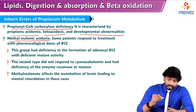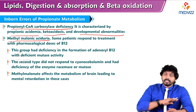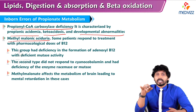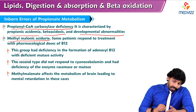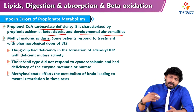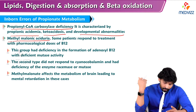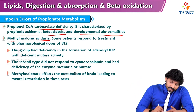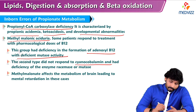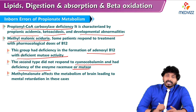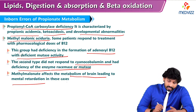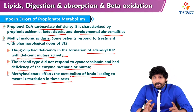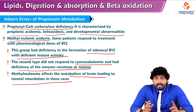Methylmalonic aciduria — we have already seen this in case of B12 deficiency: L-methylmalonyl-CoA will not be converted into succinyl-CoA, leading to accumulation of methylmalonyl-CoA in the body and causing methylmalonic aciduria. This can be treated by giving an oral dose of vitamin B12. One group has deficiency of adenosyl-B12 with deficient mutase activity; the second type did not respond to cyanocobalamine and had deficiency of the enzyme racemase or mutase. Methylmalonate affects the metabolism of the brain, leading to mental retardation.